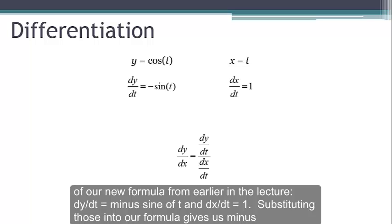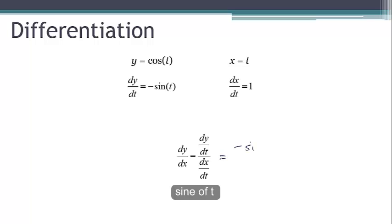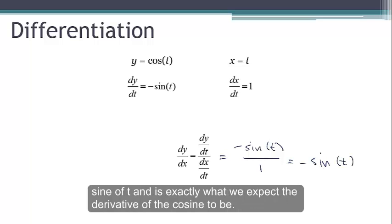If I substitute those into our formula, this gives us minus sine of t divided by one, which is just minus sine of t. And that's exactly what we expect the derivative of the cosine to be.